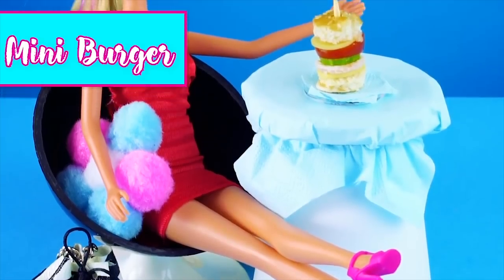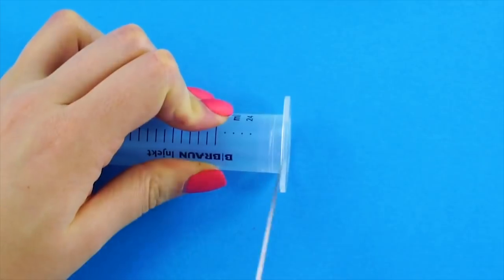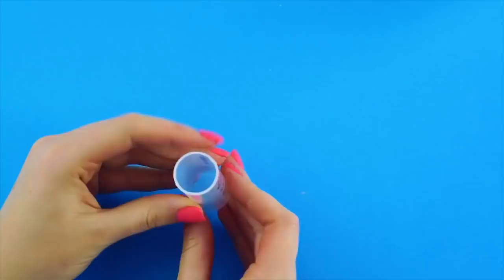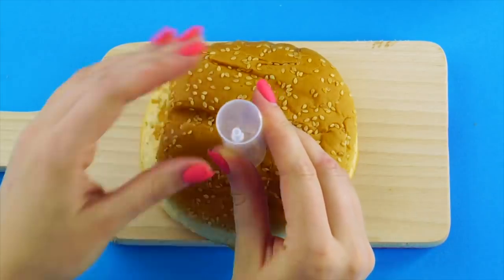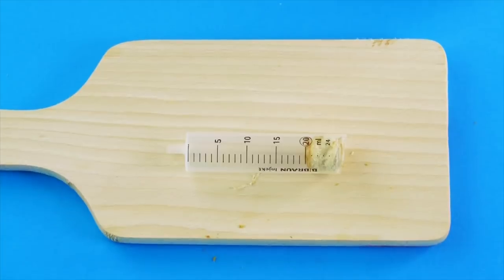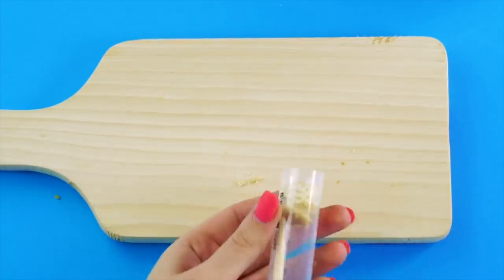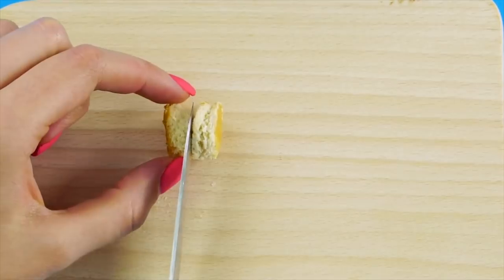Mini burger. Get a medicine dropper or syringe from the medicine cabinet. Take the syringe apart and cut off the top of the inside. Use it as a mini bun cutter. Pierce it through a hamburger bun like this. Cut off the other end and push the bun out with a chopstick. Cut open the bun.